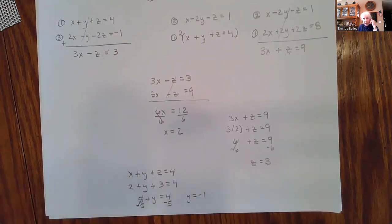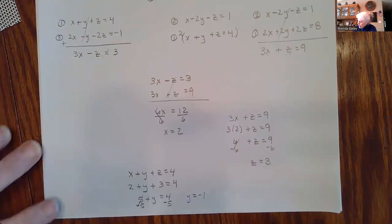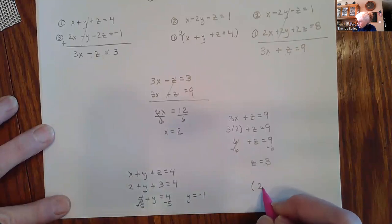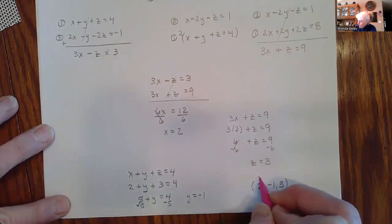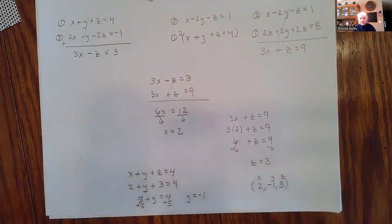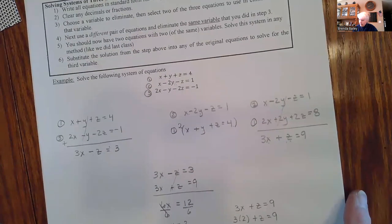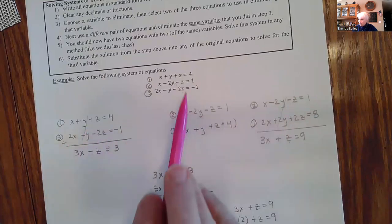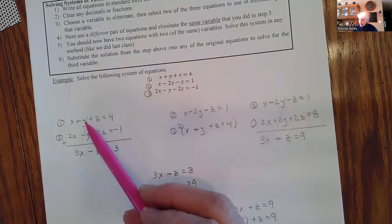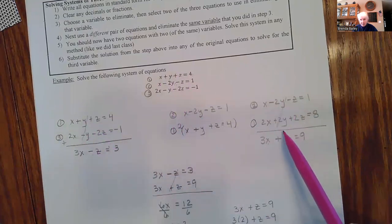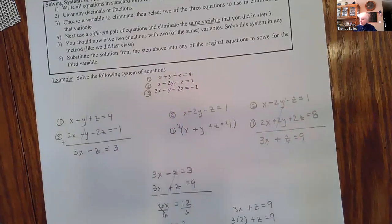Depending on how Pearson wants it, you can write x equals 2, y equals negative 1, z equals 3, or as a triple ordered pair in alphabetical order: (2, negative 1, 3). That's our x, our y, and our z. We just added the extra step of choosing a variable to eliminate at the beginning, and once you choose to eliminate the y's, you keep eliminating the y's throughout.